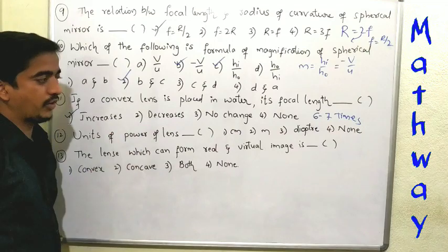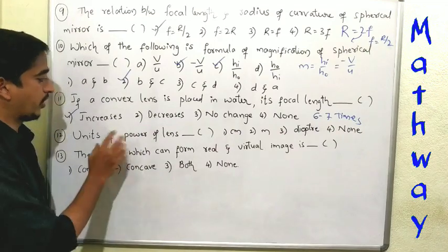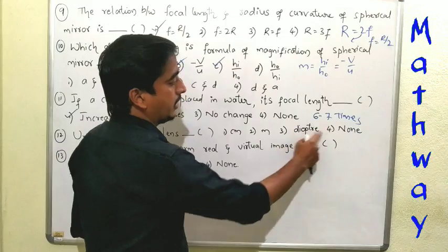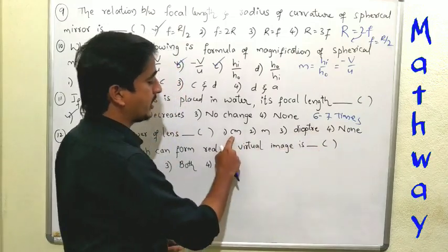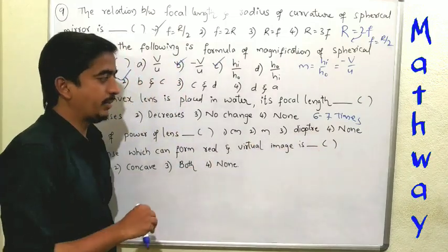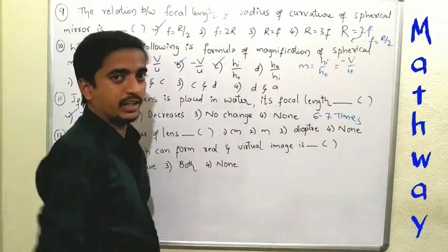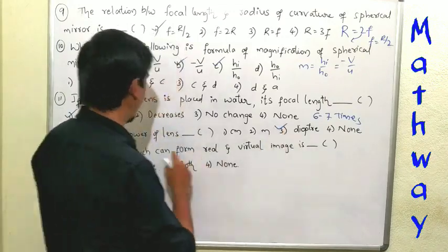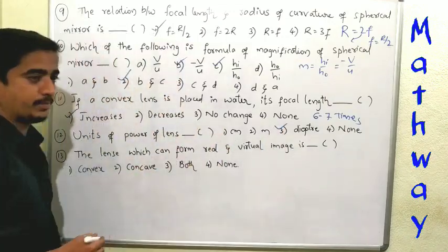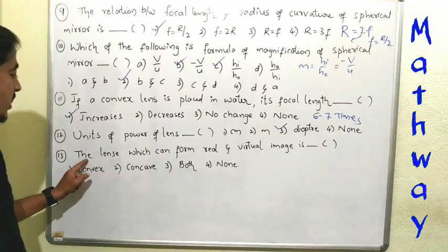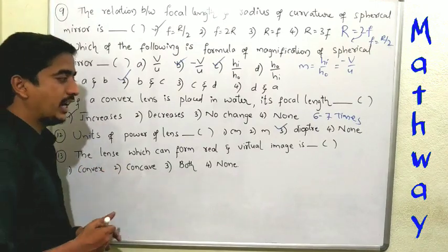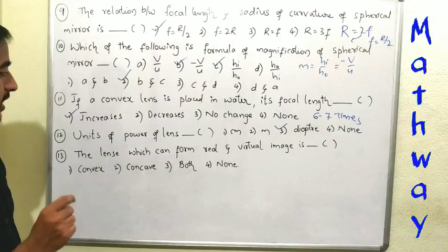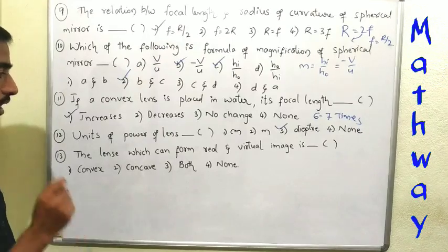Twelfth question: units of power of lens. The power of lens units — centimeters, meters, or diopter? Option three is correct. The unit of power of lens is diopter. Thirteenth question: the lens which can form both real and virtual images — which lens forms real and virtual images?